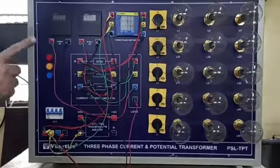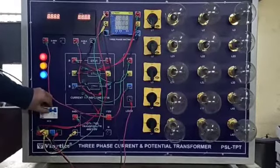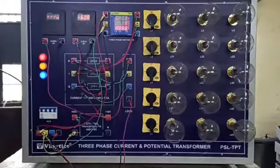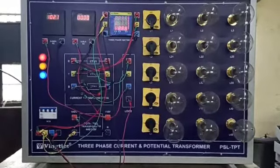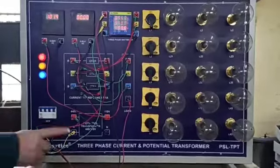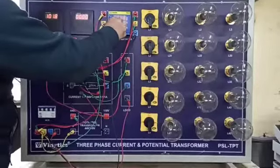Now I will first of all perform the experiment of PT. After making the connections, now I will switch on the three-phase AC. Give it some time to settle down. As you can see, I am getting here between R and B phases, I am getting 394 volt.